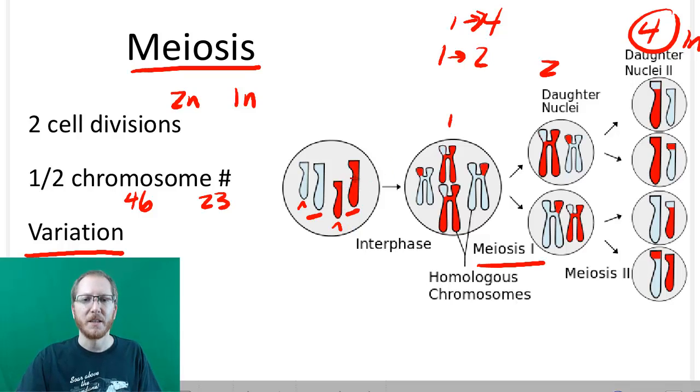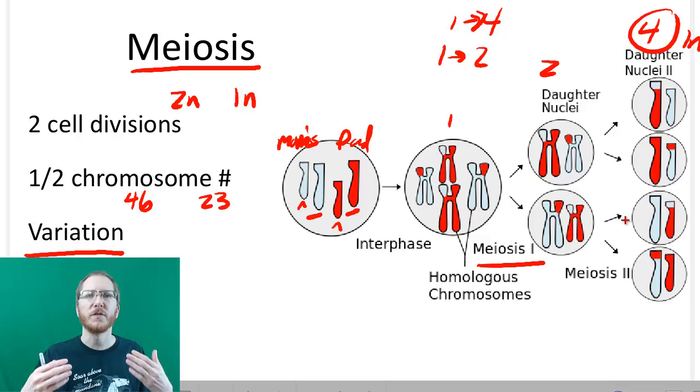You're going to get either, we can say the dark blue is dad's, and we can say the light blue is mom's. So you're going to get either mom's or dad's for that larger chromosome, and then either mom's or dad's for the smaller chromosome. So this allows for us to get different combinations in each gamete, which is why you're not normally going to see where two siblings would ever look exactly alike.